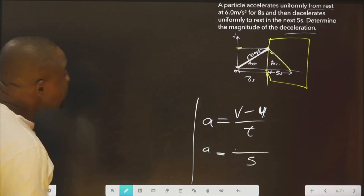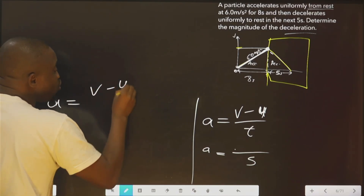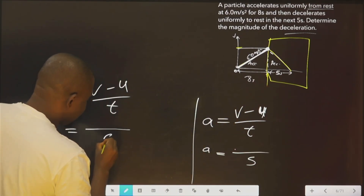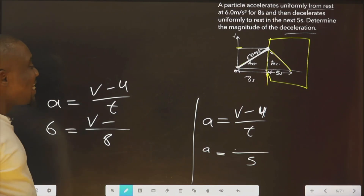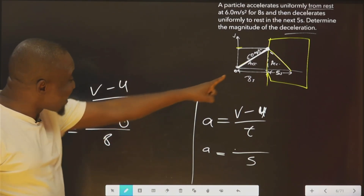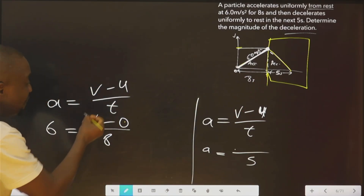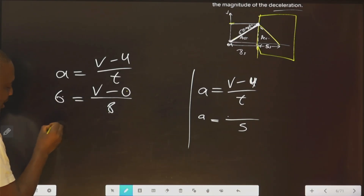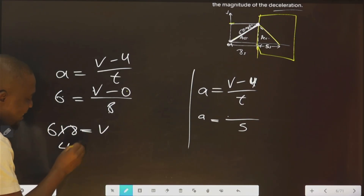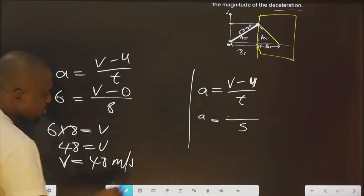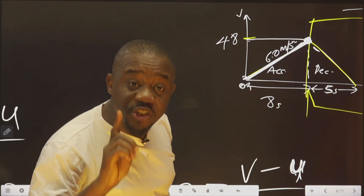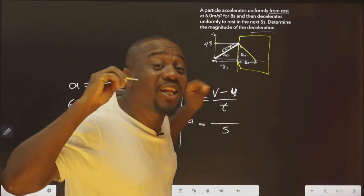So, applying the formula a = (v − u) / t: a = 6, t = 8, u = 0, and we are solving for v. Cross-multiplying: 6 × 8 = v − 0, so v = 48 meter per second. As you can see, 48 is the final velocity for the acceleration phase — that is where it stopped accelerating.